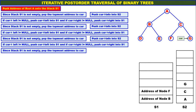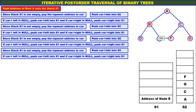Again check whether stack S1 is empty. Since stack S1 is not empty, pop the topmost address to CUR. Topmost address is address of node F — pop it and assign to CUR. Push CUR info into S2, so F is pushed onto stack S2. Left child of F is null, therefore there is no push.